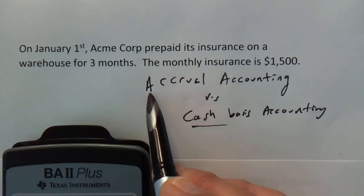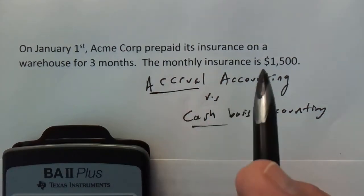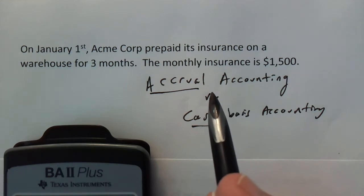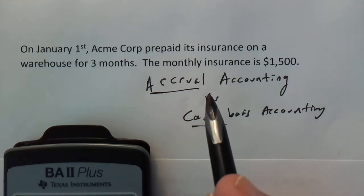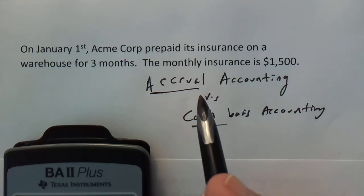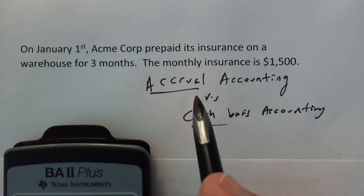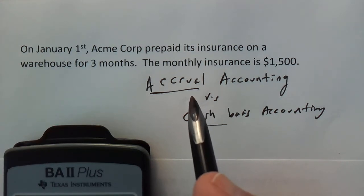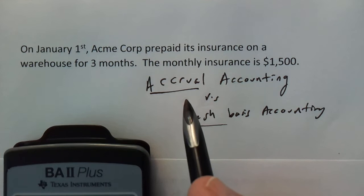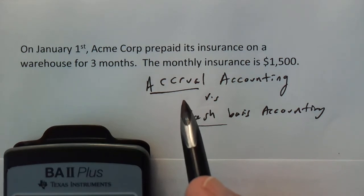Most large companies are on an accrual accounting basis. And that means that whether or not cash is coming in or out, expenses and revenues are recognized when they occur and not when they are actually paid for.